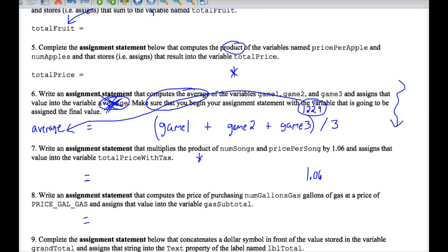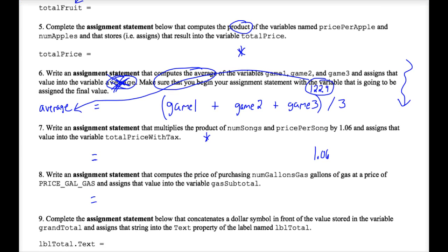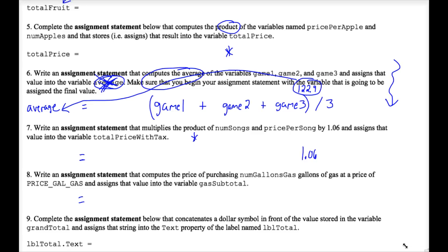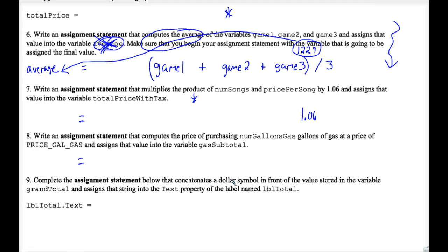And number nine is the only different problem here. I'll talk about that for a second. Number nine, instead of a variable, we're putting our final answer into a label. And labels have that text property that you always have to remember to type out. So what is it that we're putting into this label?